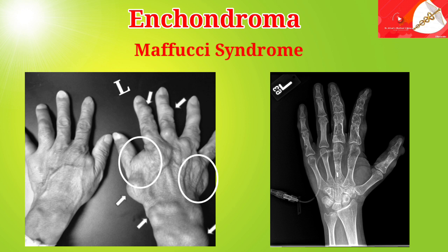In this radiograph, you can see multiple expansile intramedullary lucent lesions involving multiple phalangeal bones, with multiple rounded soft tissue densities seen around the first, second, and fifth fingers, associated with small tiny calcifications representing phleboliths related to soft tissue hemangiomas. Overall findings are suggestive of Maffucci syndrome.